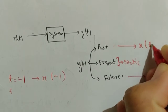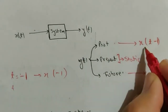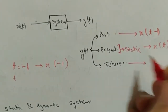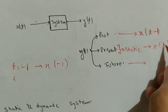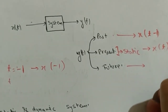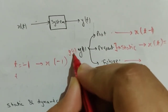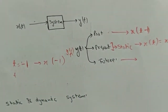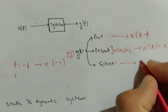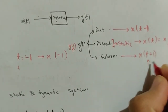If y(t) = x(t-1), put t = 1: you get x(0) and y(1), so input is applied at 0 seconds and output at 1 second — output depends on past values. If y(t) = x(t), put t = 1: you get x(1) and y(1) — same time instance, so this is present input.